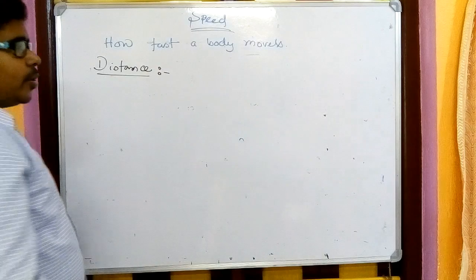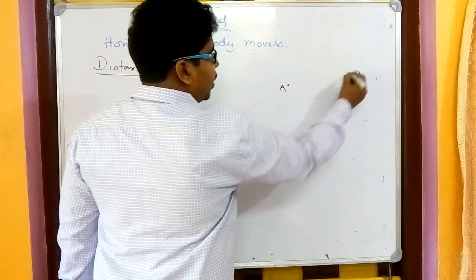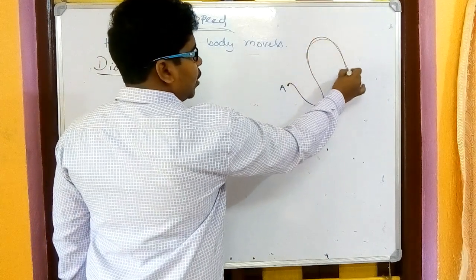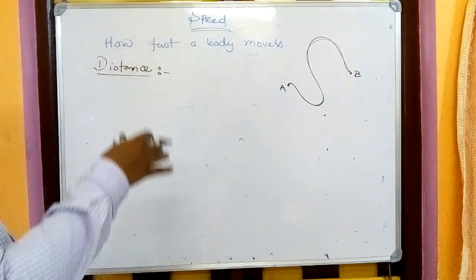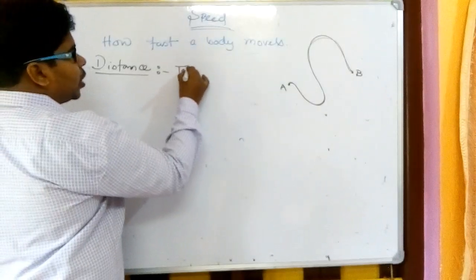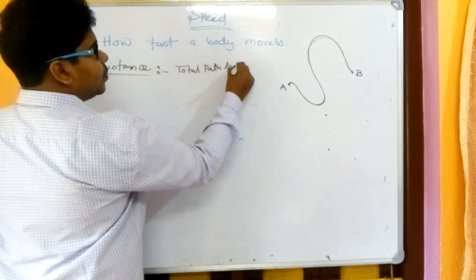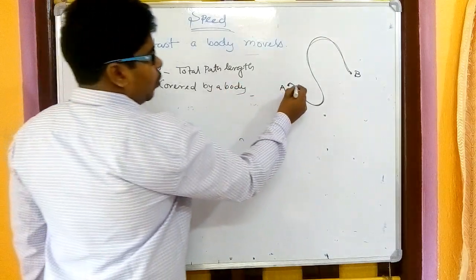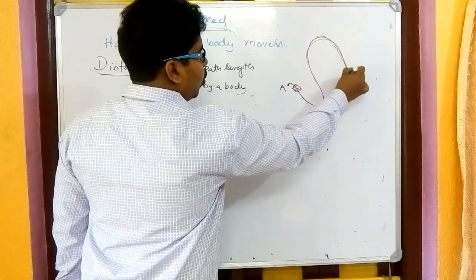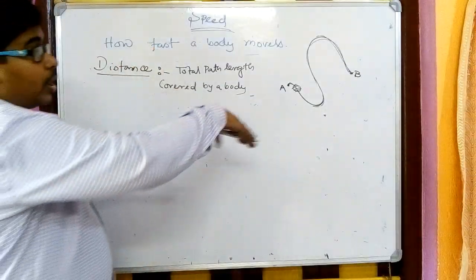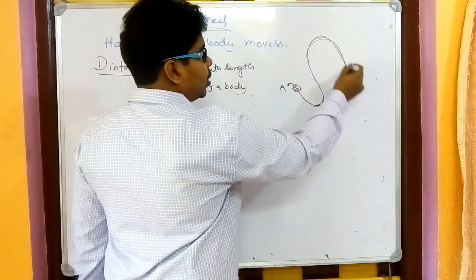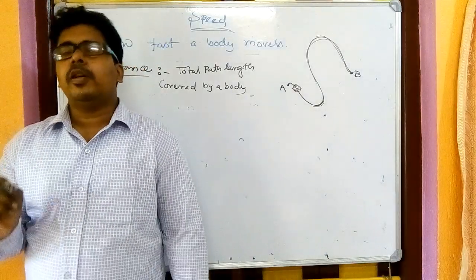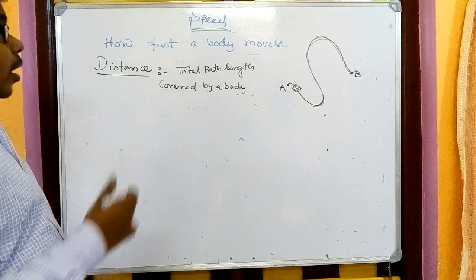To measure speed we need another physical quantity: distance. If there is a point A and a point B, and a body travels from A to B along some path, distance is defined as the total path length covered by the body.